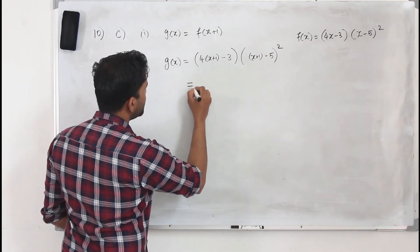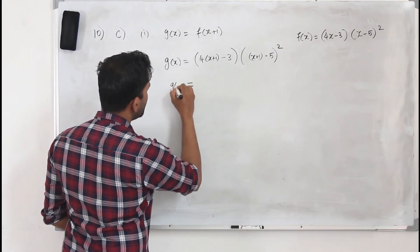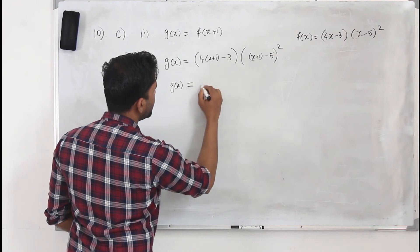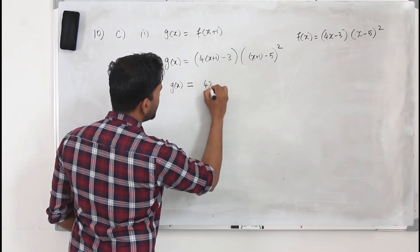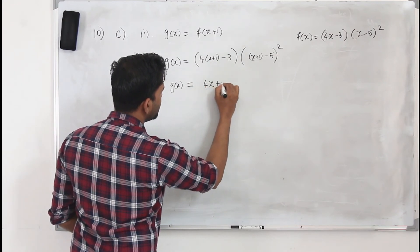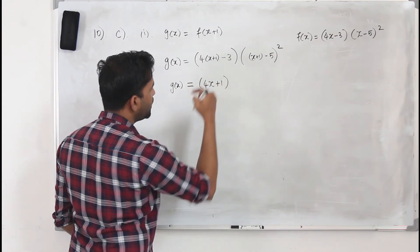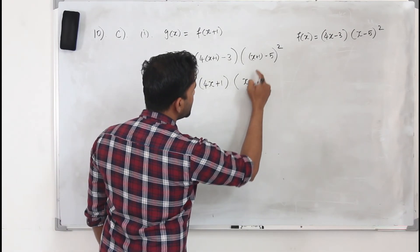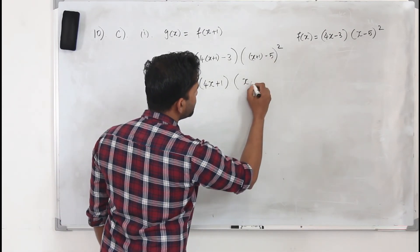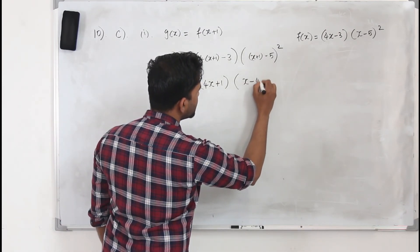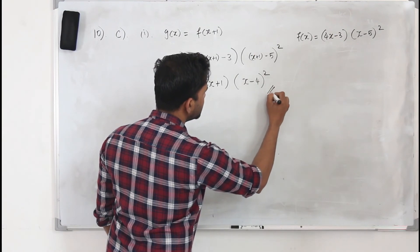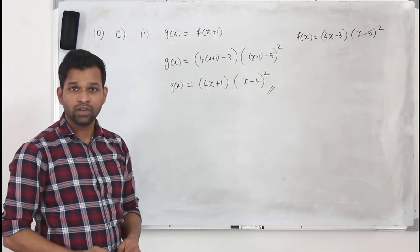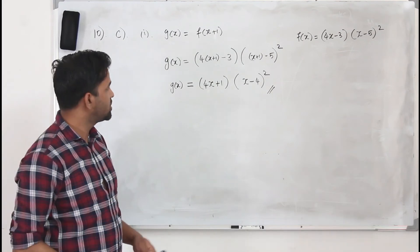So your g of x equals (4x plus 1)(x minus 4) squared. That is the solution for the first question in part c — you leave it in factorized form as stated by the question.